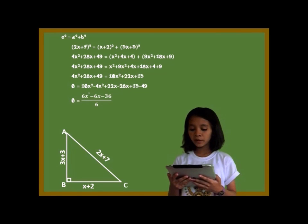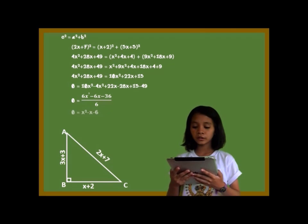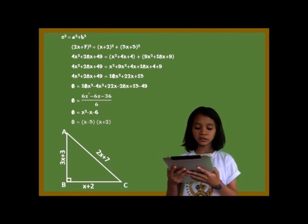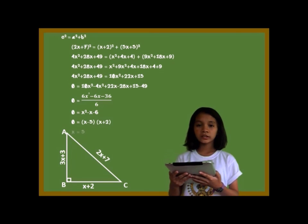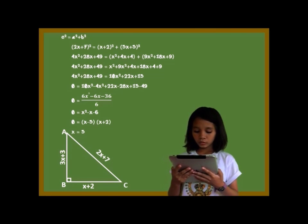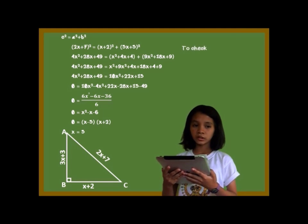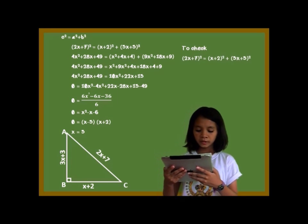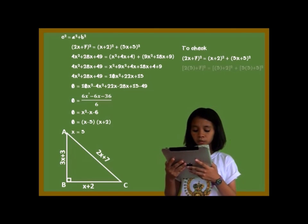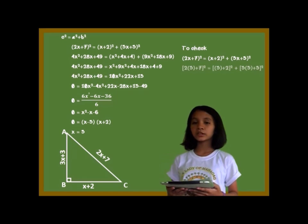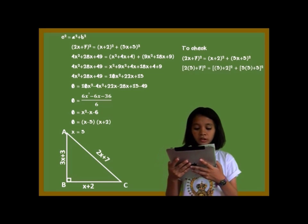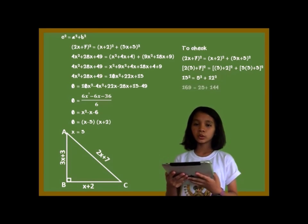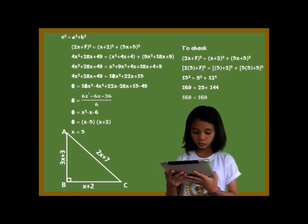This equation is divisible by 6, so we divide it by 6 and find the factors. 0 is equal to x squared minus x minus 6. The factors are (x minus 3) and (x plus 2), so x is equal to 3. We substitute x = 3 back into the expressions: (2(3) + 7) squared is equal to (3 + 2) squared plus (3(3) + 3) squared.